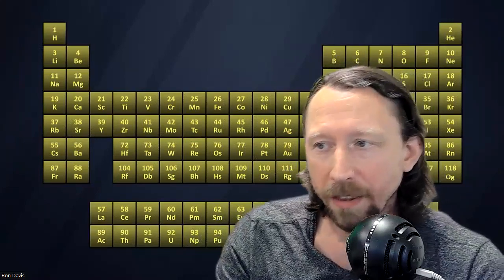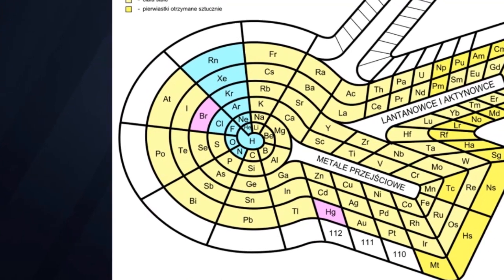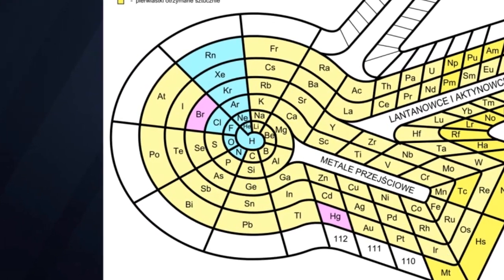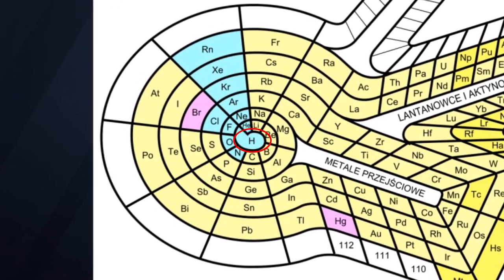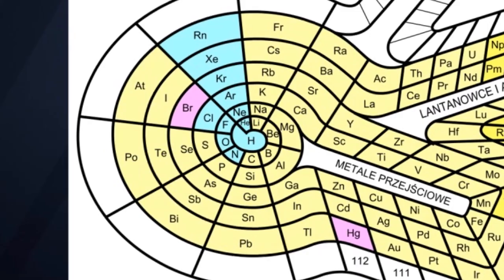To get a more modern look at this, we can take a look at some of the periodic tables that have come out in more recent years that still attempt to maintain this spiral arrangement. Here's one example of those. As you can see, once again, hydrogen is at the very center where it has a connection to all the groups of elements, because of course hydrogen is the fundamental building block from which all of the other elements are put together.